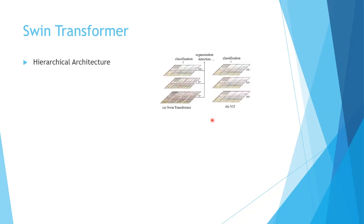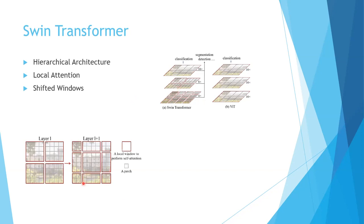The Swin transformer basically extends the original transformer by introducing a hierarchical architecture that operates on multiple levels of the feature map. Instead of processing the entire image at once, the Swin transformer applies self-attention to local patches of the image. Local attention is computed from adjacent patches, which reduces complexity to linear. Those local patches are further combined to form larger feature maps and then attention is computed over them. This hierarchical approach allows the Swin transformer to process images of arbitrary size efficiently. Another key difference is the use of shifted windows in the Swin transformer, which allows self-attention to be applied to overlapping patches, helping capture fine-grained details in the input data.